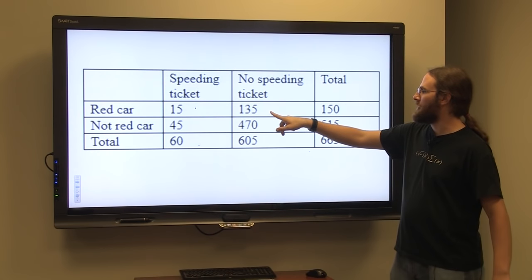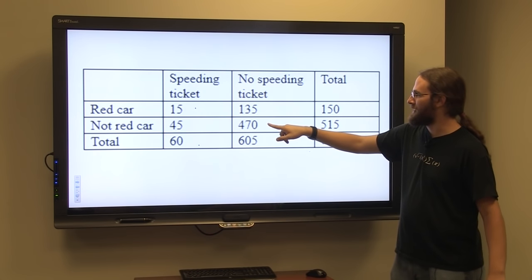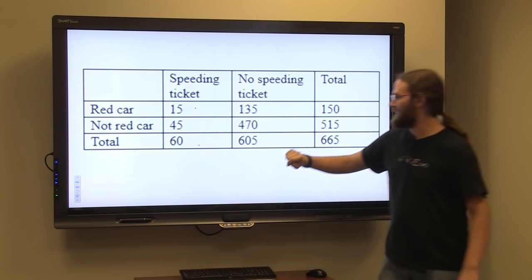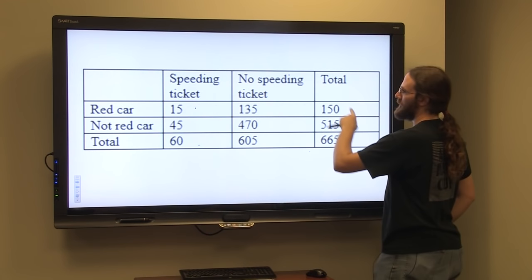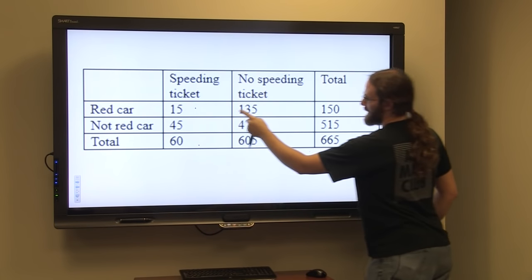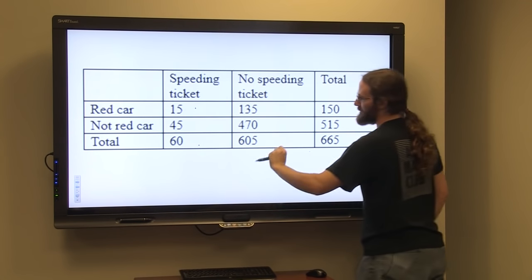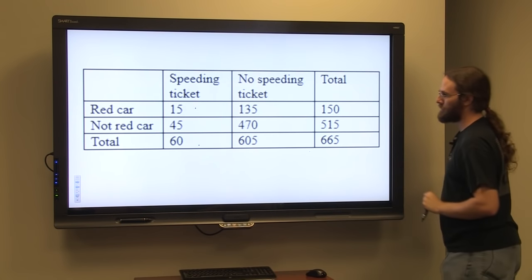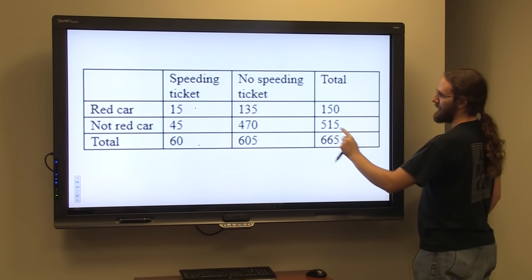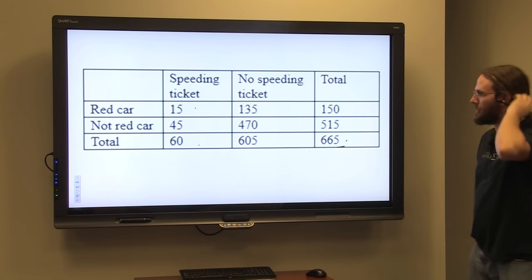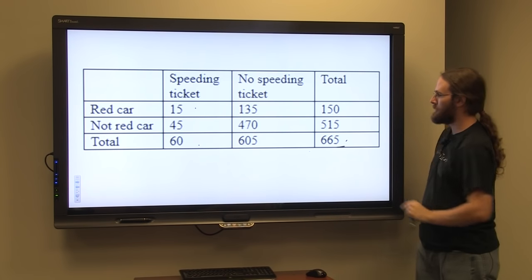Then we have 135 cars that are red that did not get a ticket, and 470 that have not been ticketed that are not red. 470 plus 135 gives you 605. Looking at the row for red cars, 15 plus 135 gives us 150. For non-red cars, 45 plus 470 equals 515. In this two-way table, 60 plus 605 gives the total of 665 cars surveyed, and you can also get 665 by doing 150 plus 515.